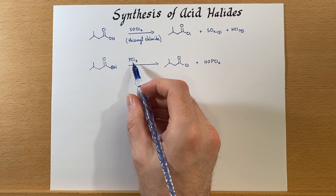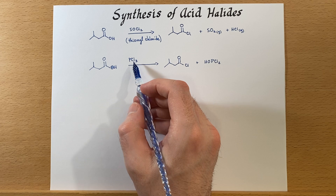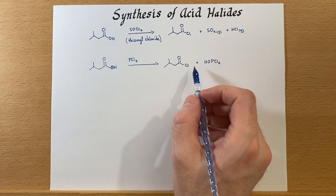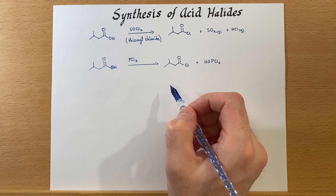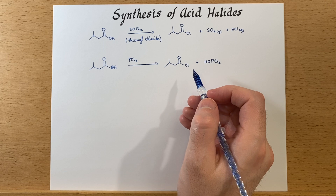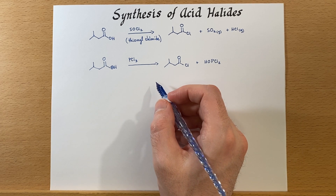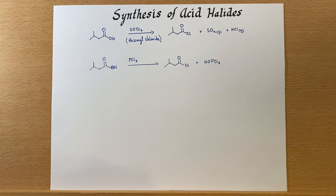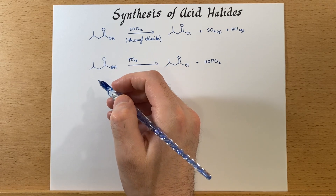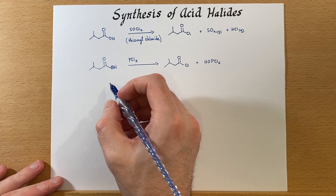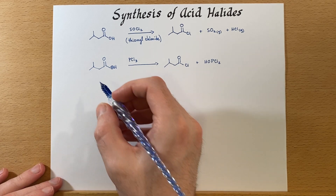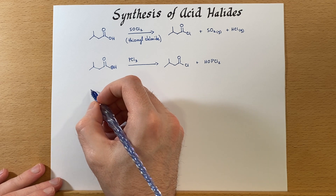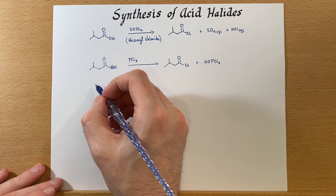It's also possible to substitute the bromine equivalent — PBr3 — and in that case you would make the brominated version, an acid bromide, which I suspect has similar reactivity. Most people use acid chlorides because chloride is a little more available than bromine.